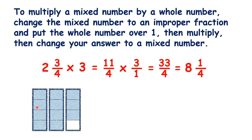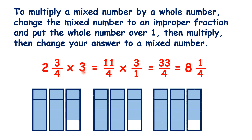Now let's show this visually. You start with two and three quarters, so you start with 11 quarters. You multiply by three, so we now have three lots of two and three quarters. But if we regroup to make whole rectangles, you can see that we now have eight whole rectangles and one quarter of another one.